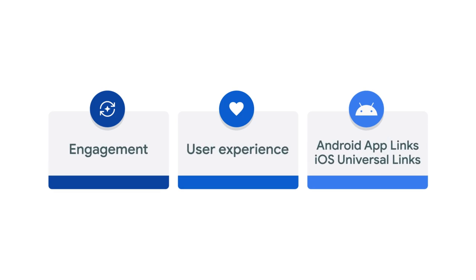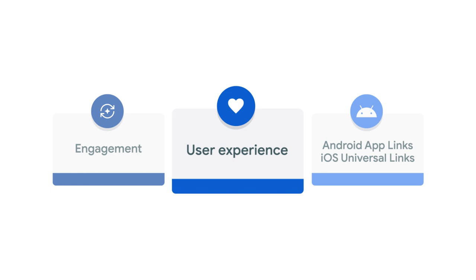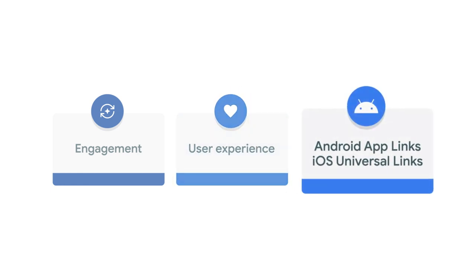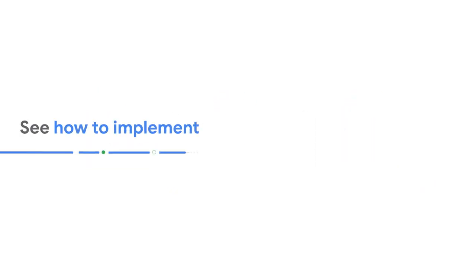To sum up, use deep links for a better user experience and engagement with your app. The more deep links in your app, the better the user experience. If possible, app links are preferable to custom URL schemes. During our next video, we will go deeper into the tools you can take advantage of to make deep linking easier for you and your marketing goals.